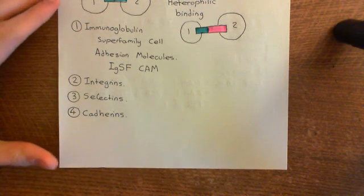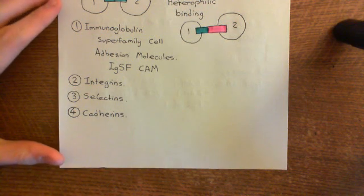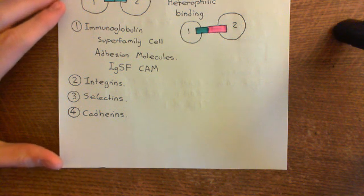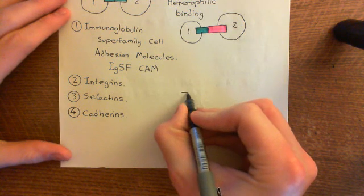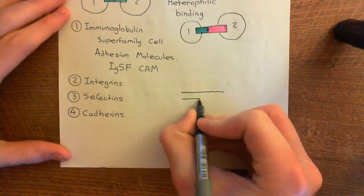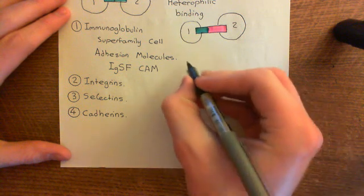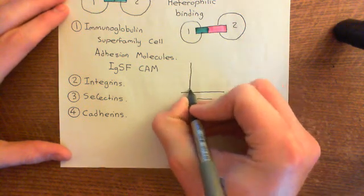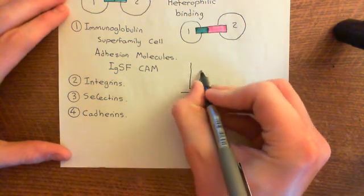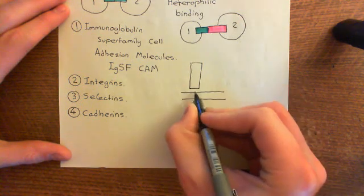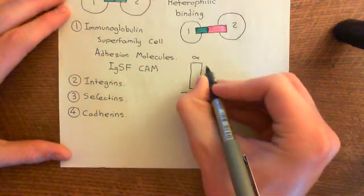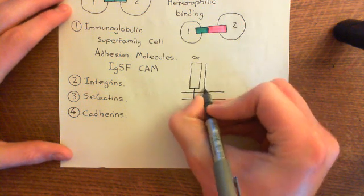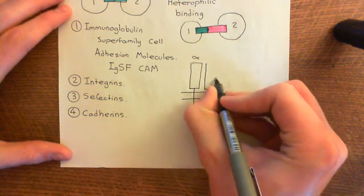Integrins are not just one protein — they consist of two separate subunits. If this is the phospholipid bilayer of our cell, then an integrin has two subunits: an alpha subunit and a beta subunit sitting side along with it.